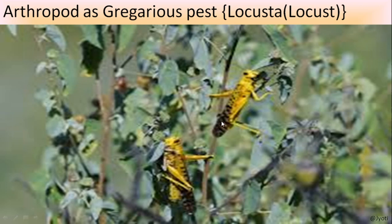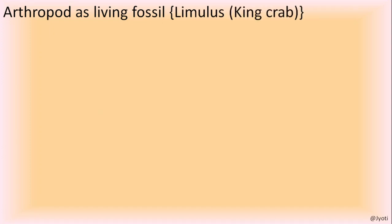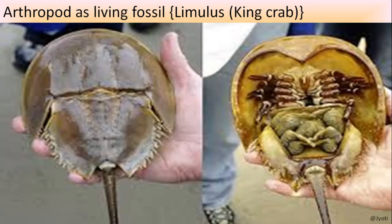Some arthropods are gorgeous-looking but are pests - they are very colorful and beautiful, but they eat plant parts, especially leaves, and destroy plants within a short period. They are called locusts. Limulus, commonly known as king crab, is an arthropod that is a living fossil - an organism that has been present on Earth for years without undergoing any changes or evolution.